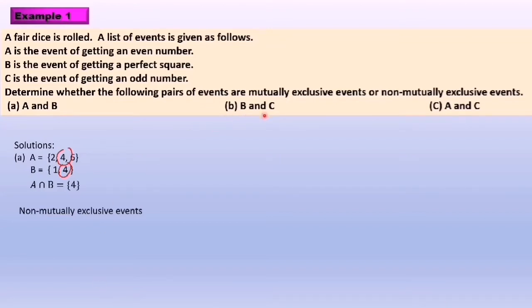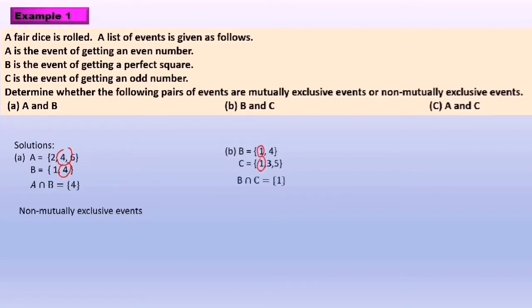Next, B and C. We list out the elements of Set B and Set C. We then check whether Set B intersects Set C or not. Set B and Set C have a common element. Set B intersect Set C equals {1}. Conclusion: event B and event C are non-mutually exclusive events also.